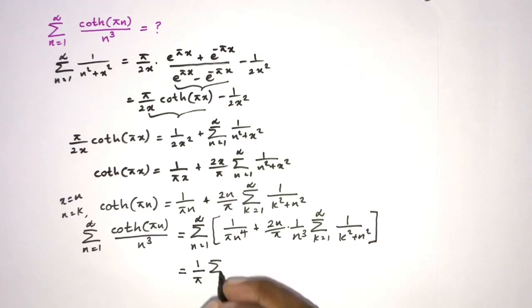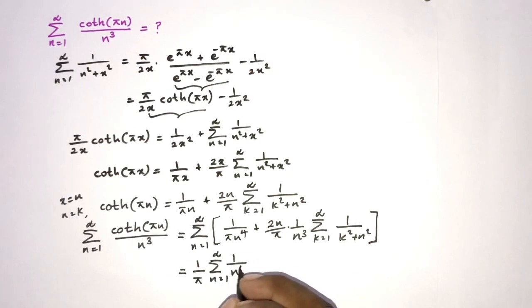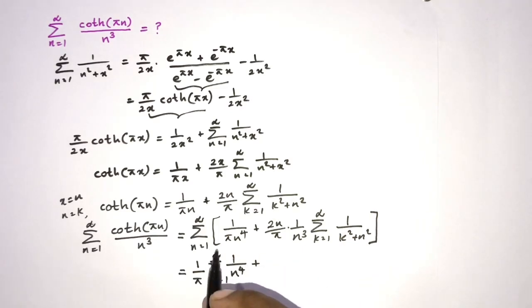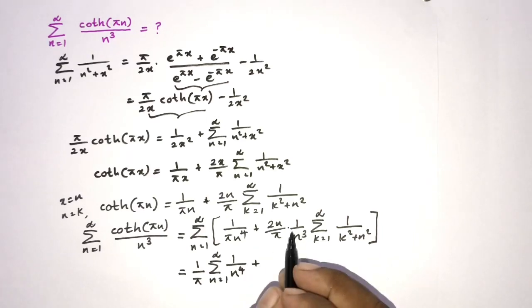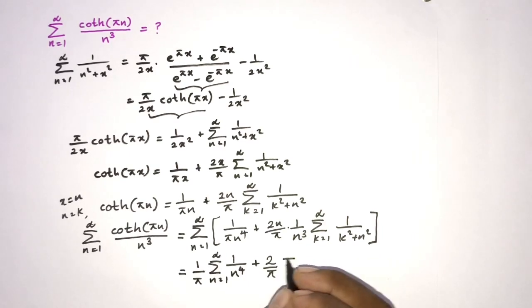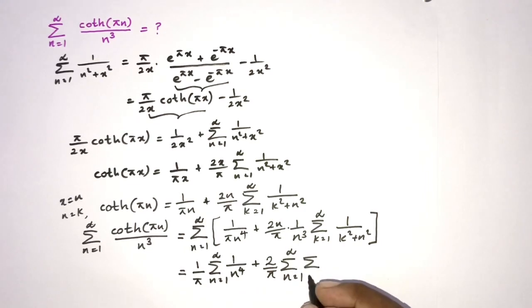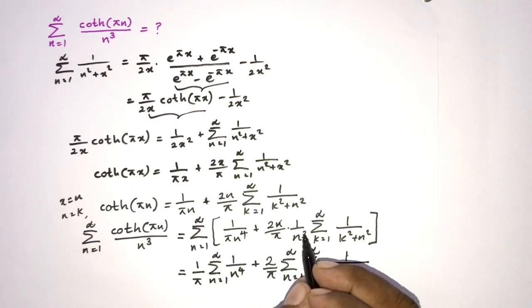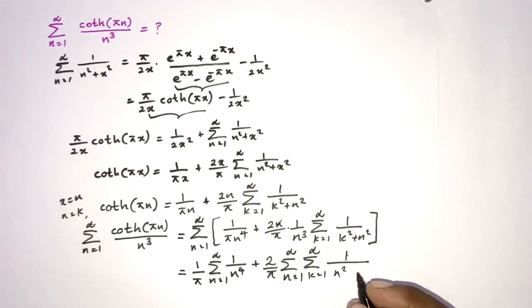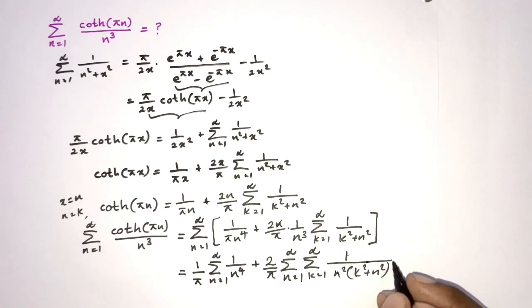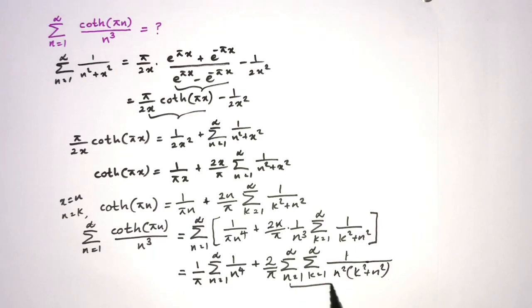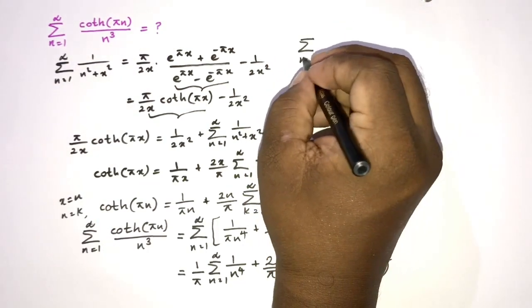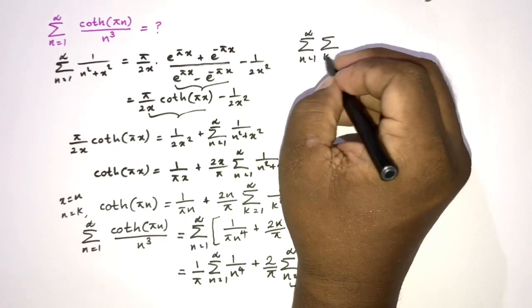Simplifying, since 1 over pi is a constant, we get 1 over pi times the sum from n equals 1 to infinity of 1 over n to the fourth, plus 2 over pi times the double sum from n equals 1 to infinity and k equals 1 to infinity of 1 over n squared times (k squared plus n squared). Now we have a nice double sum to evaluate.